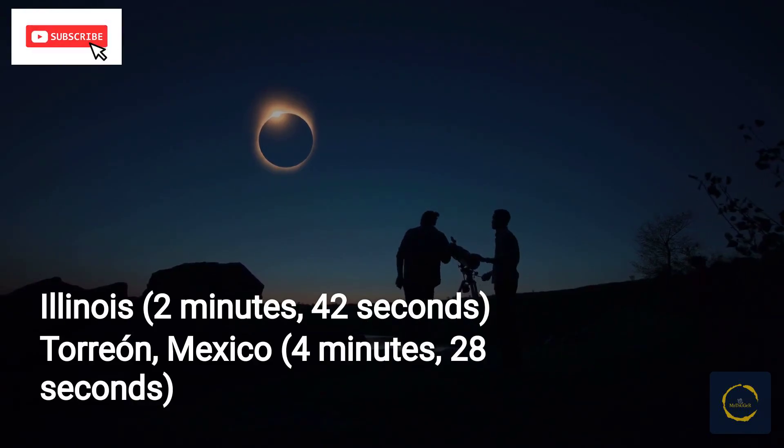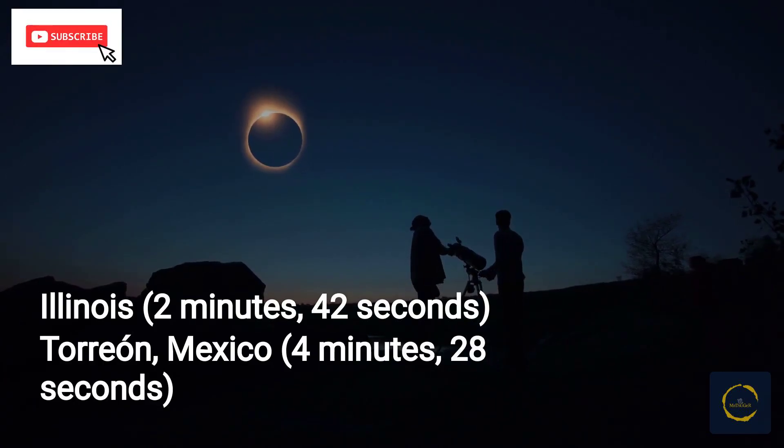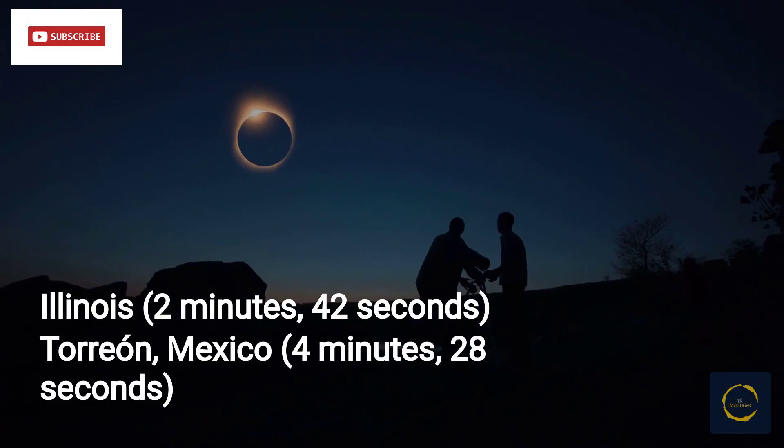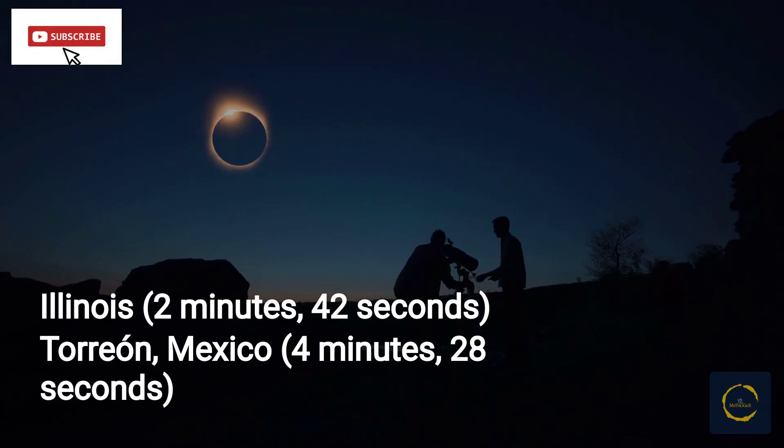Seven years ago, the longest period of totality was experienced near Carbondale, Illinois, at 2 minutes, 42 seconds. However, for the upcoming eclipse, totality will last up to 4 minutes, 28 seconds, in an area about 25 minutes northwest of Torreon, Mexico.